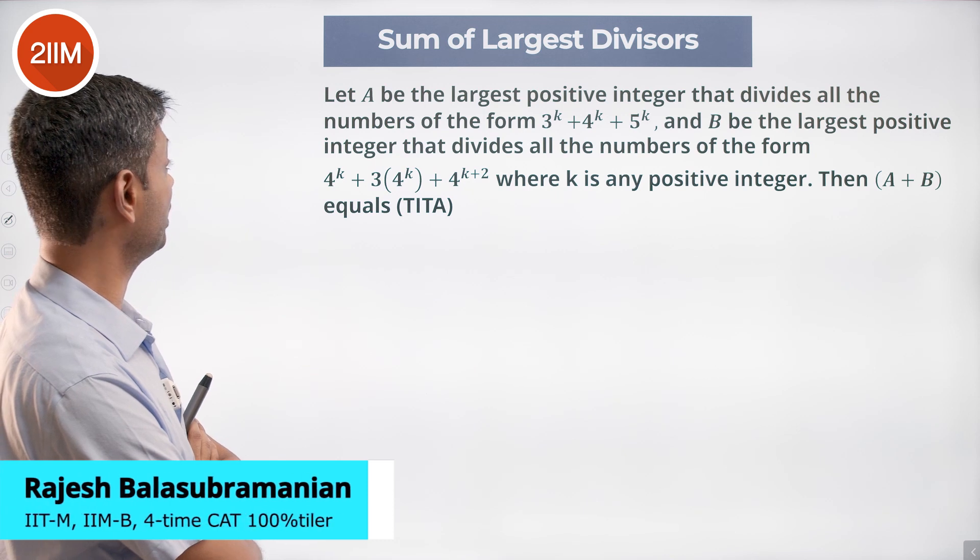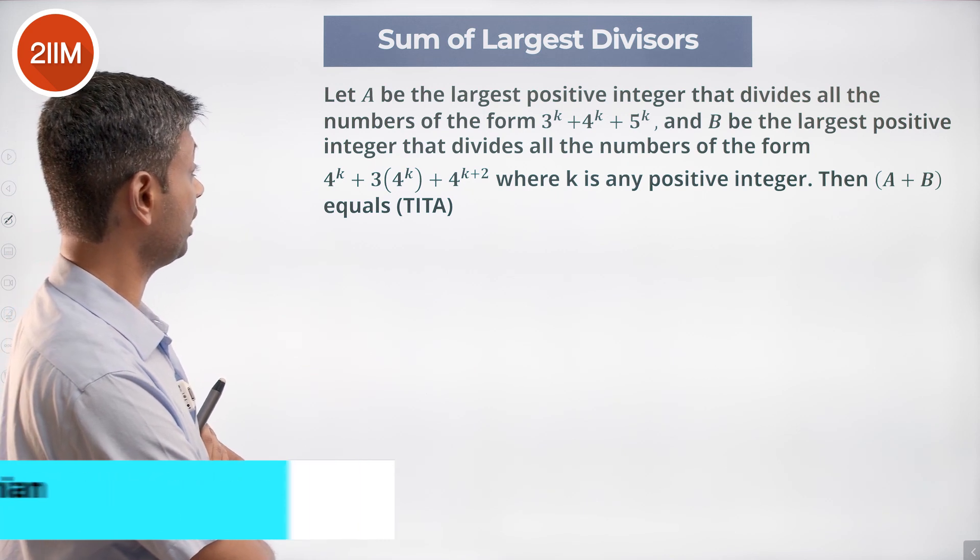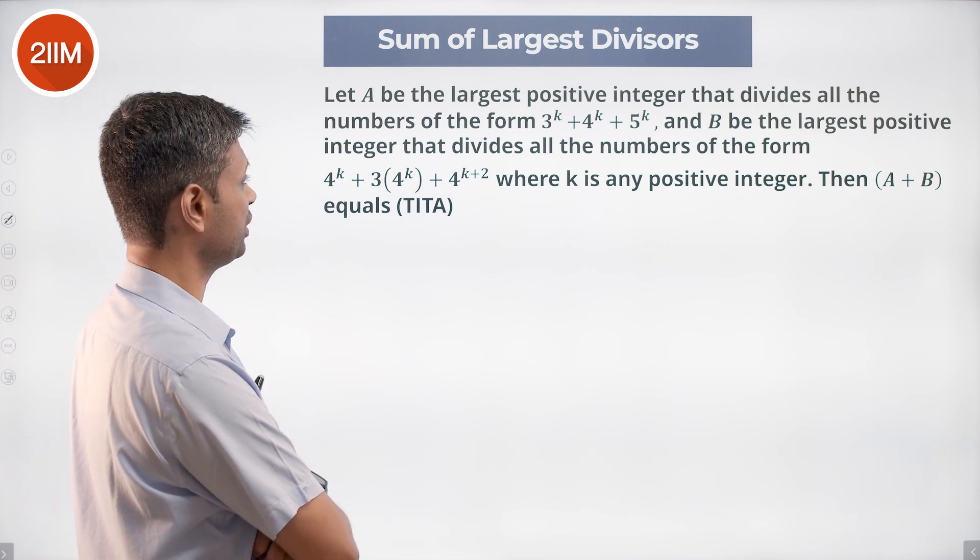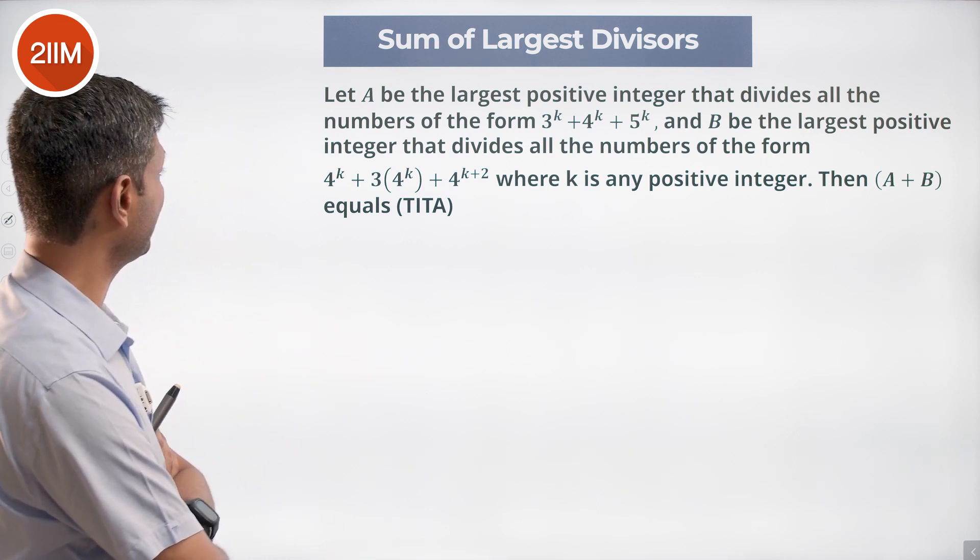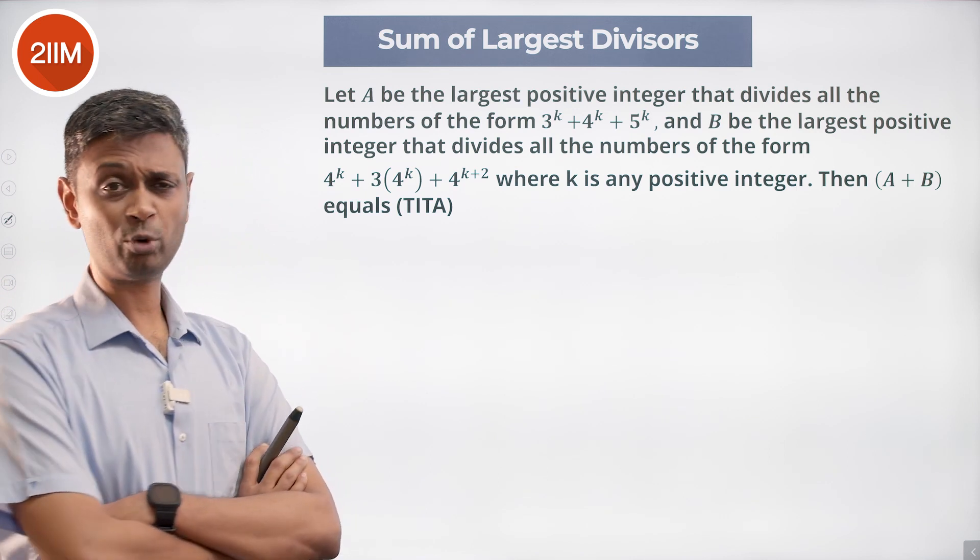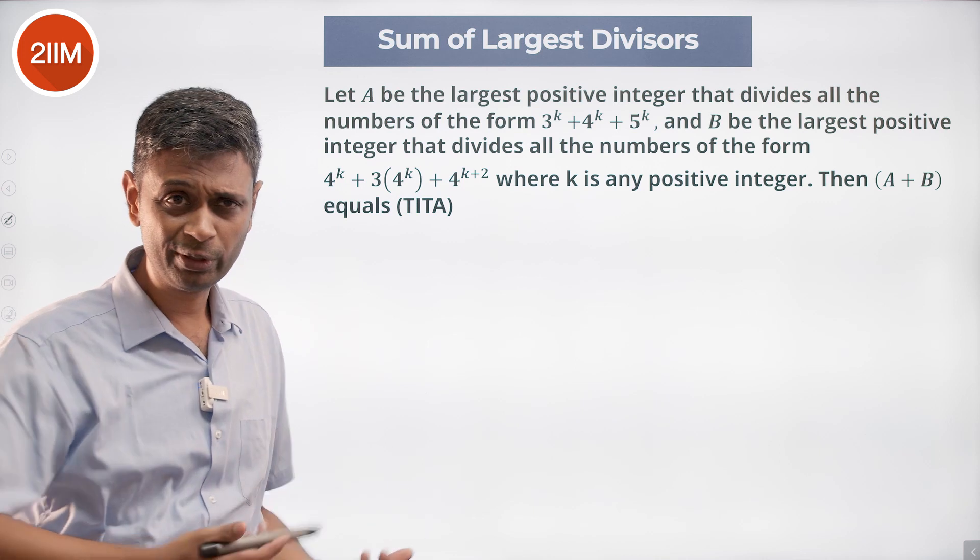Let A be the largest positive integer that divides all numbers of the form 3^k + 4^k + 5^k, and B be the largest positive integer that divides all numbers of the form 4^k + 3 times 4^k + 4^(k+2), where k is any positive integer. Then A + B, what do we do?